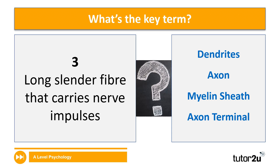Number three is 'long slender fibre that carries nerve impulses.' The options are dendrites, axon, myelin sheath, or axon terminal. Which one do you think it is? And the answer that hopefully you got right was axon.